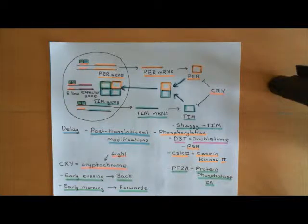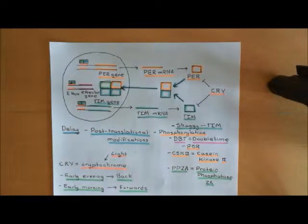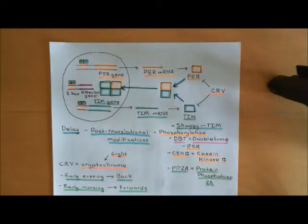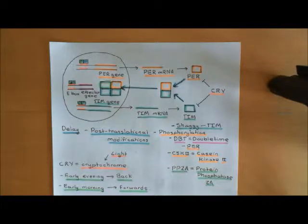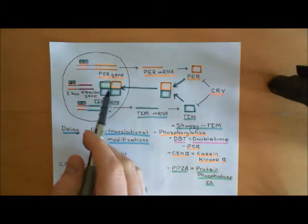Throughout the day, up until around 8 o'clock at night, you're going to be getting period and timeless levels on the rise, basically going up and up. Period and timeless proteins can heterodimerise into period-timeless heterodimers, which can then translocate into the nucleus.